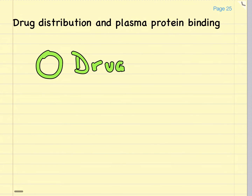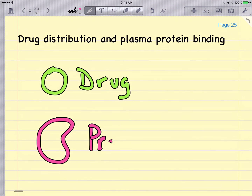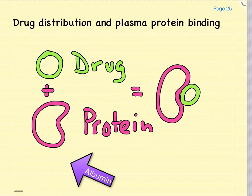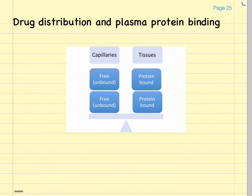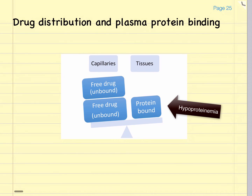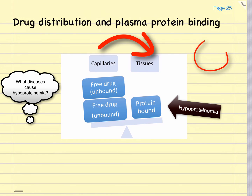Some drugs rely on large plasma proteins in order to be distributed throughout the blood and stay in the circulation. Albumin is an example of one of these proteins. Only the free or unbound drug can leave the circulation and travel to tissues; the protein-bound drug will stay in the circulation. The equilibrium between free and protein-bound drug will shift as more drug leaves the blood and goes into the tissues. Any decreases in plasma protein levels will increase the amount of drug that can travel to the tissues, which can potentially cause adverse reactions.